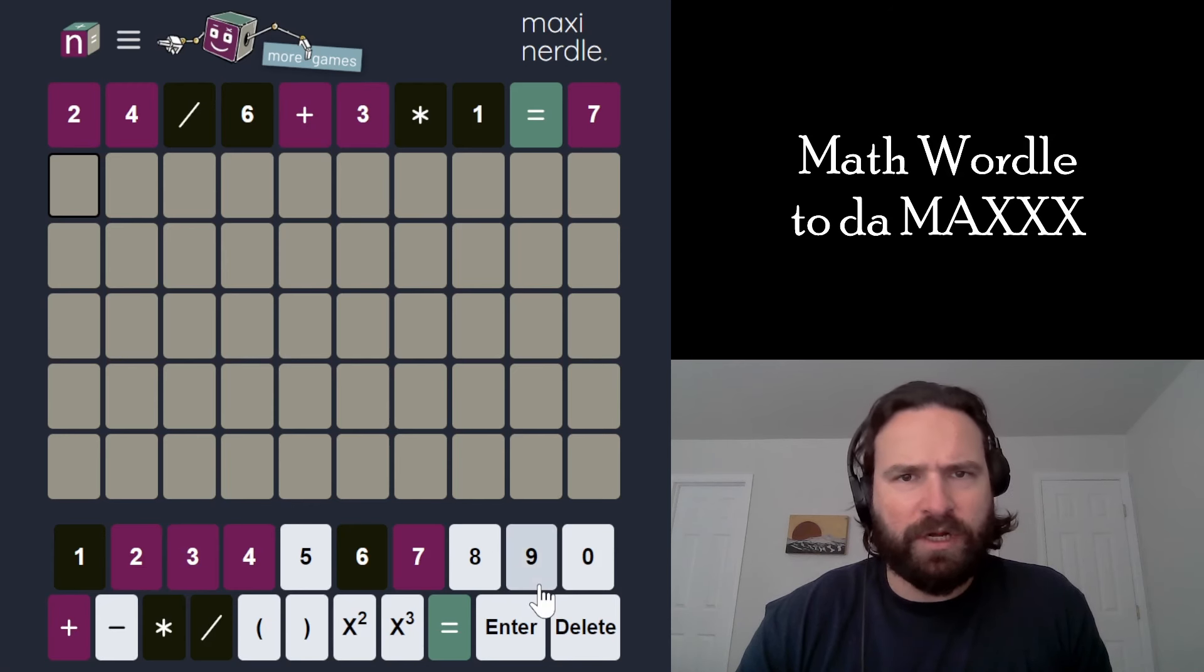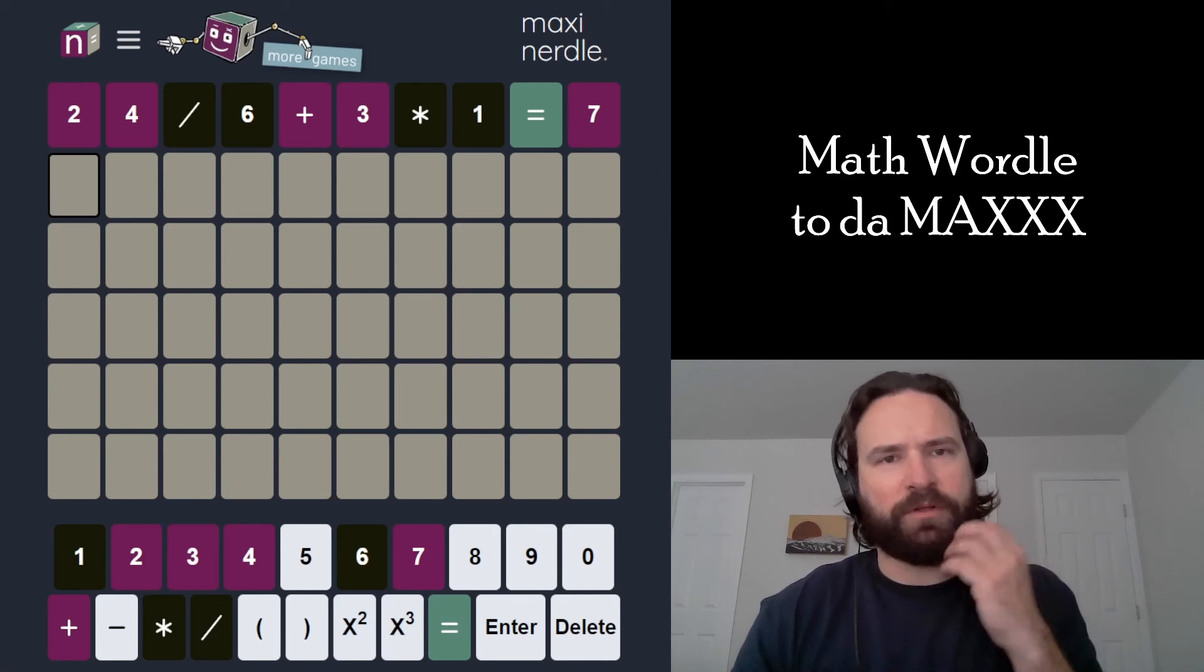Interesting. Get a bunch of numbers out of it, which is good. But we've got to make this smaller somehow. We're probably going to use some subtraction, I would assume. Maybe get some exponents involved.